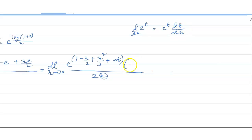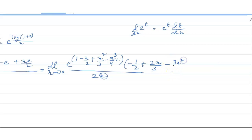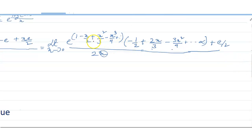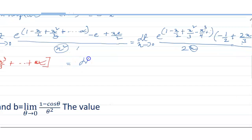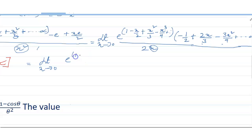After applying the rule it should be minus half plus 2x by 3, minus x cubed by 4, so it should be 3x squared divided by 4, plus infinity, minus and plus e by 2. If we put 0 in here we get 0 by 0 form again, so we apply L'Hôpital's rule again.